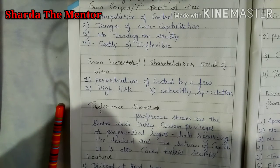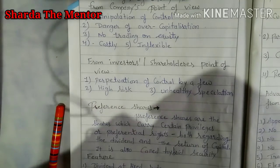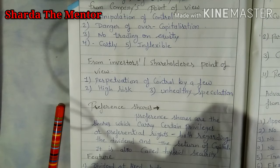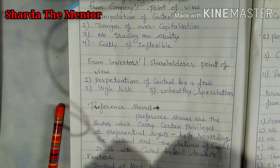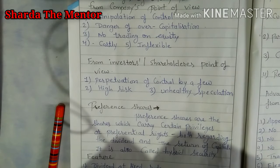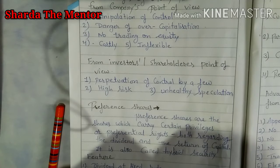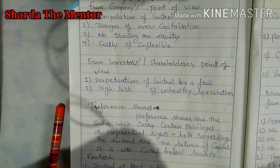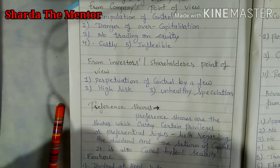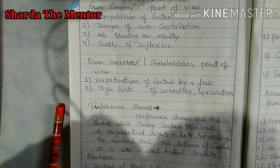Equity shares are also considered costly. When a company issues equity shares, the cost of issuing — like underwriter commission, preliminary expenses, and registration charges — makes the total cost higher as compared to preference shares. That's why equity share is considered a costly security.